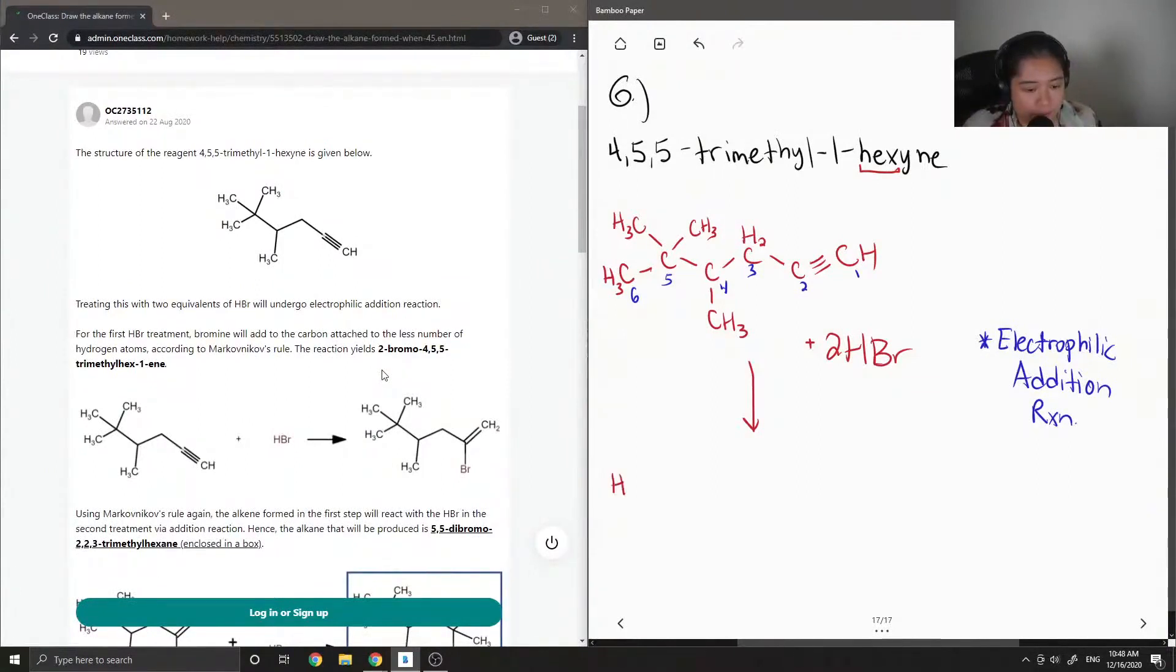In this electrophilic addition reaction, there's something called Markovnikov's rule, which states that the bromine will be added to the carbon that has the less number of hydrogen atoms. So in this case, it is carbon number two. So knowing this, we can draw out our product.